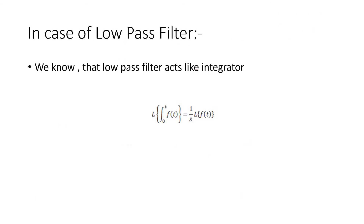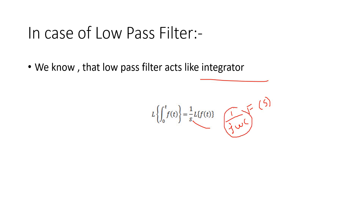A low pass filter acts like an integrator. The Laplace transform of integration gives a factor of 1/s, which can be written as 1/jωC. Since ω is in the denominator, as frequency increases this factor decreases, and as a result the high frequency component will be attenuated. So a simple low pass filter can attenuate the high frequency component in the receiver section.